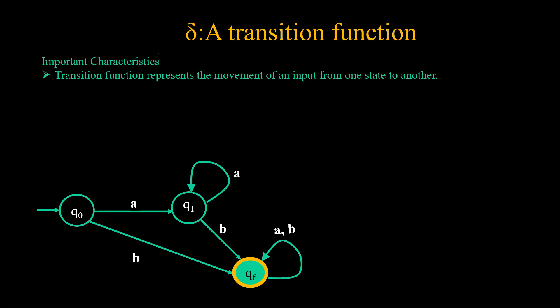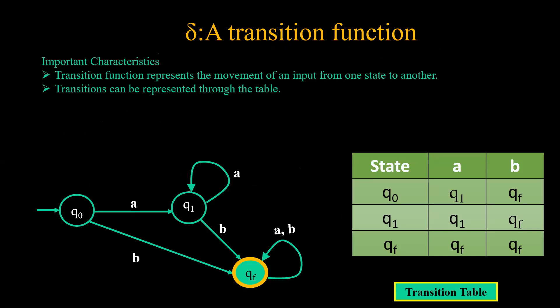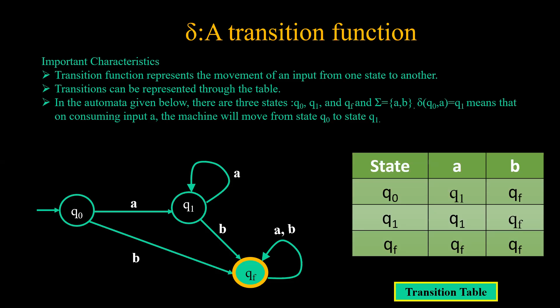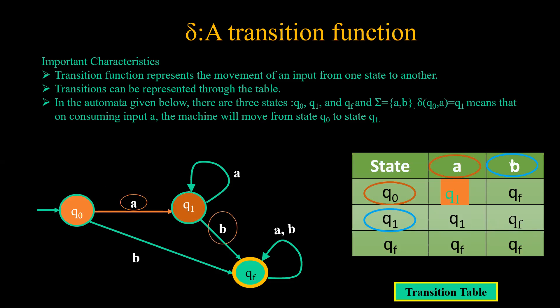The next symbol used in finite automata is delta, the transition function. Transition function represents the movement of an input from one state to another. They can always be represented through a transition table. In this table, we are considering three states — Q0, Q1, and QF — where QF is the final state and Q0 is the start state. Sigma is {A, B}, so we have written A and B in the columns. If delta(Q0, A) = Q1, this means that on consuming A from Q0, the machine will move to state Q1. Similarly, delta(Q1, B) = QF is how we represent it in the transition table.